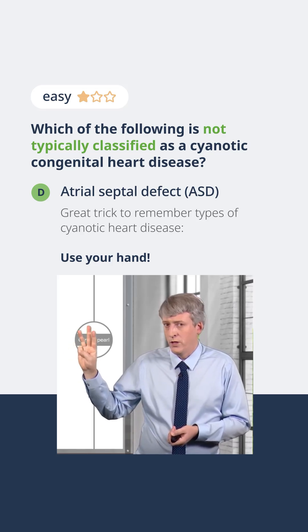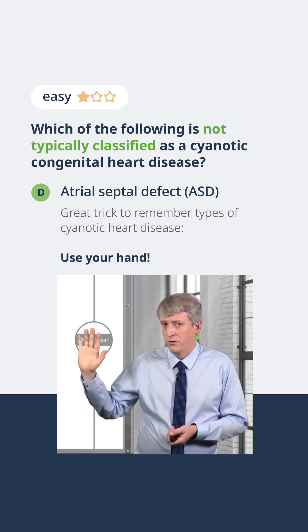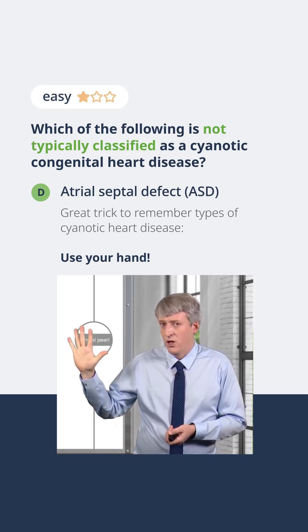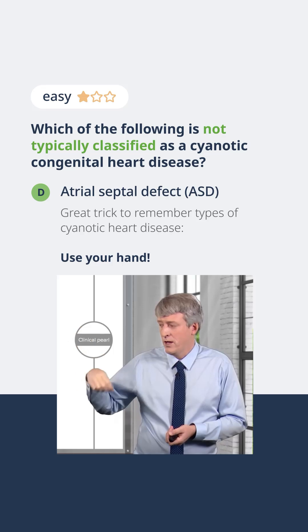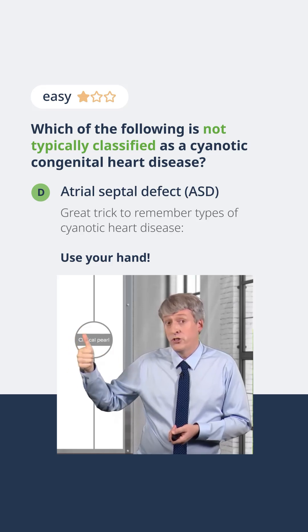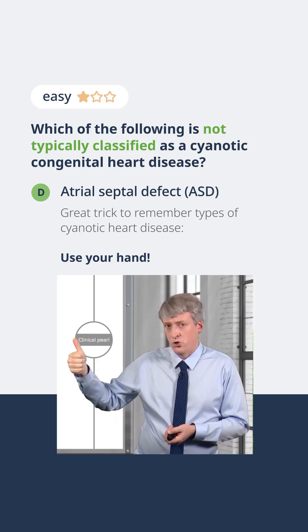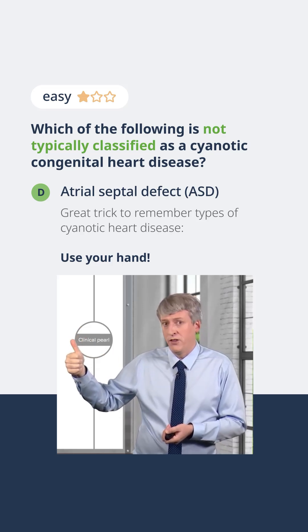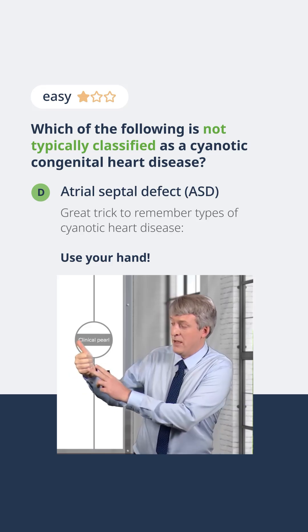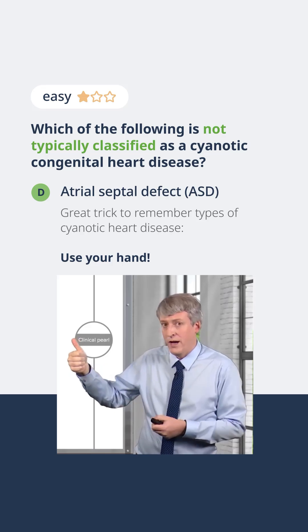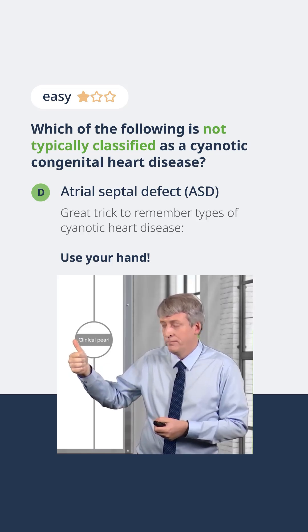I'll go through them one at a time. One is truncus — you can see my thumb is a trunk coming off the main mixing of the right and left ventricle.